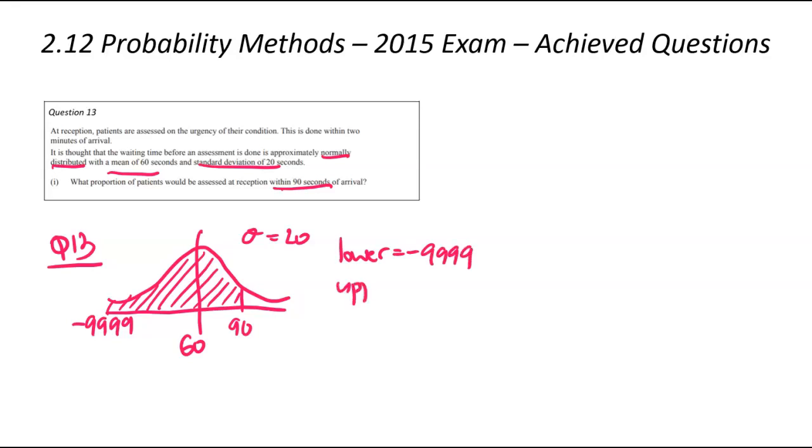My lower is going to be that negative four 9s. My upper is going to be the 90. My standard deviation is 20, and my mean equals 60. I plug that into my calculator and that'll tell me the probability that a patient is being seen within 90 seconds of arrival, 0.9332, rounded to 4 decimal places.